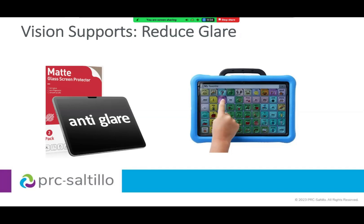Number one is looking at how we can reduce glare on a device. If you have an iPad or tablet, you can buy screen protectors with a matte finish, and this will help reduce glare from overhead lights or outside sunlight. Simply having a key guard on the device also helps. The key guard shown in this photo is clear, but you can get key guards that are black, which would also help reduce glare.